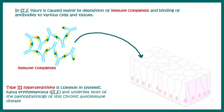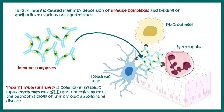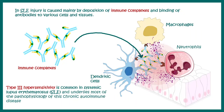All these immune complexes are deposited in several places such as the skin or epithelial layers. They attract specific cell types such as dendritic cells, macrophages, or neutrophils. All of these cells can secrete several cytokines which are inflammatory in nature and overall lead to huge inflammation in that particular tissue.